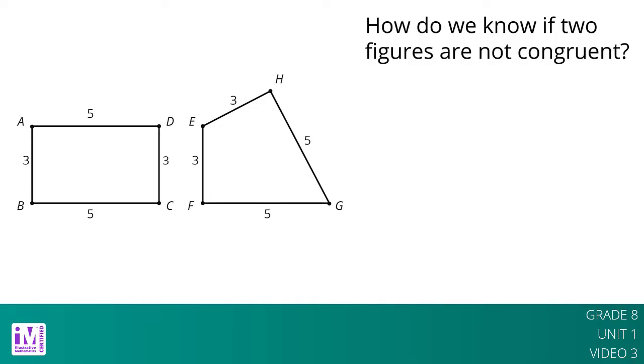For example, rectangle ABCD can't be congruent to quadrilateral EFGH. Even though they both have two sides of length 3 and two sides of length 5, they don't correspond in the same order.